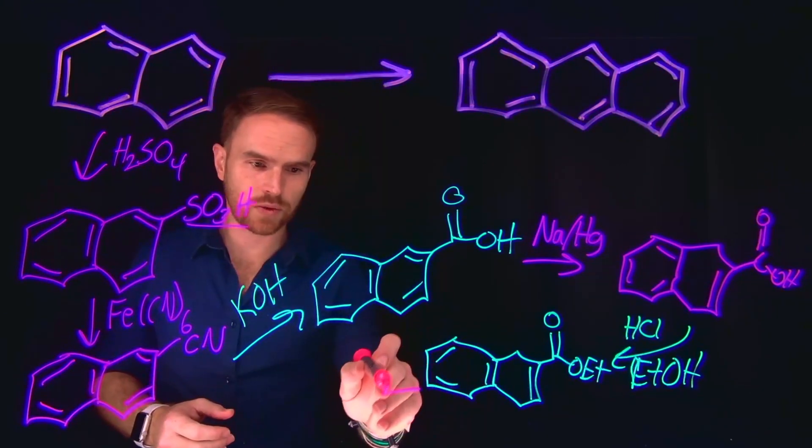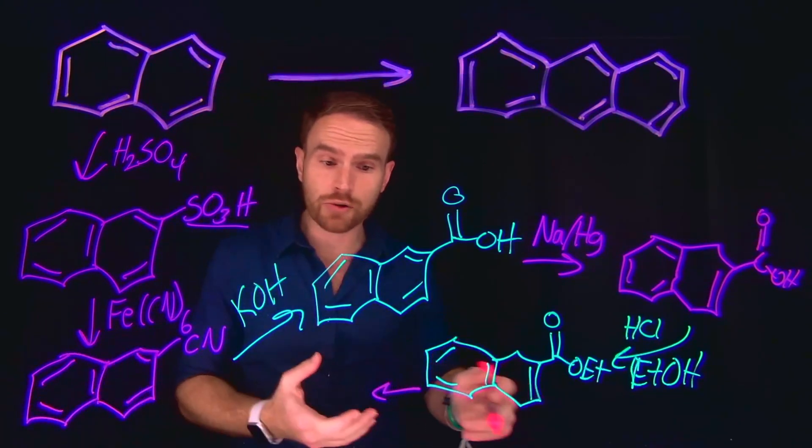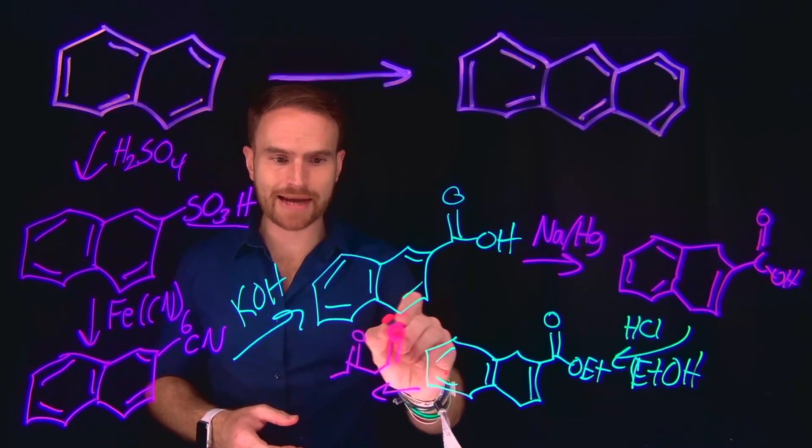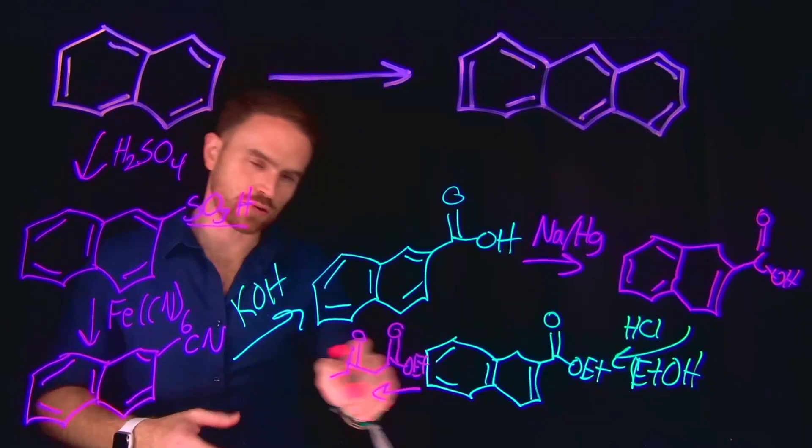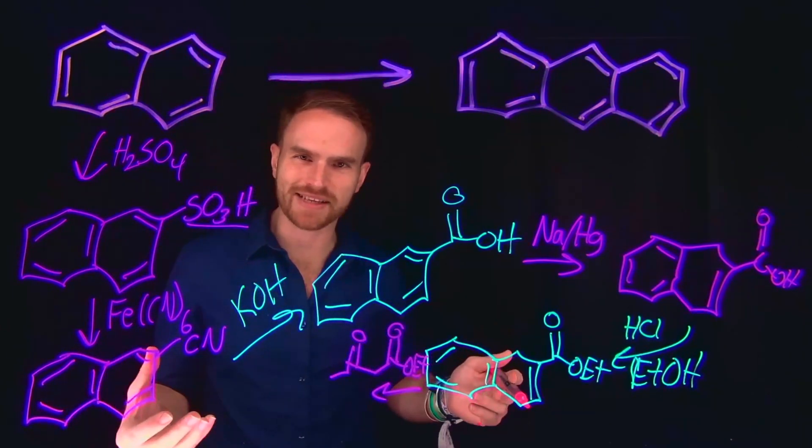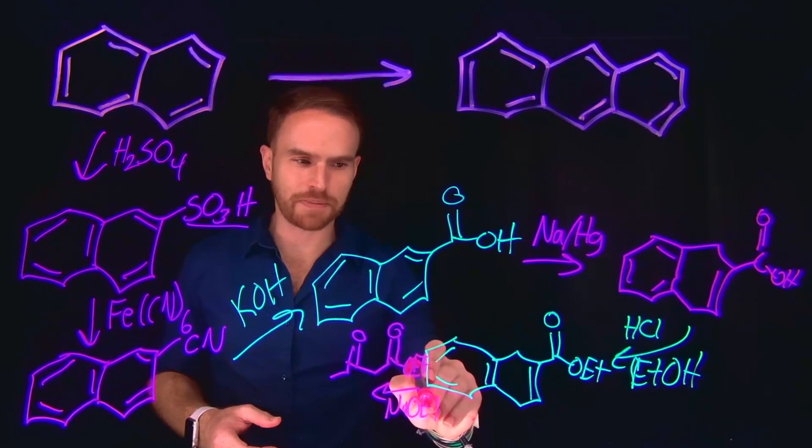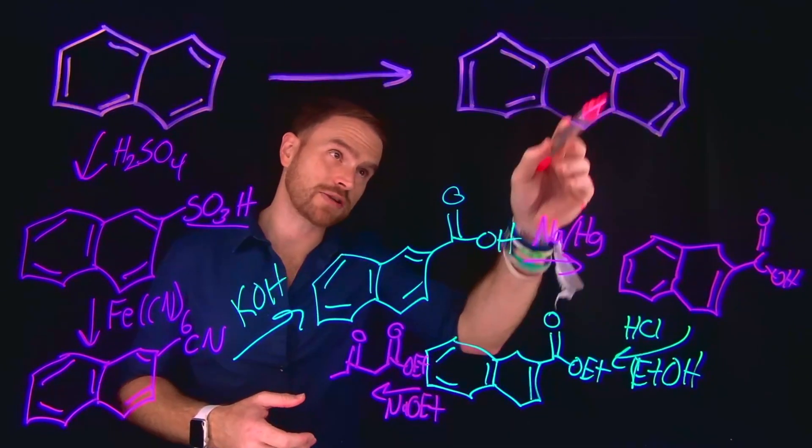In that Dieckmann cyclization, we need a very good Michael donor. In this case, we're going to use this reactant which also has an ester group on this side, and we just need a strong base like sodium ethoxide, for example. Sodium ethoxide would be a sufficient base in this case, and it's going to allow us to form that third ring.